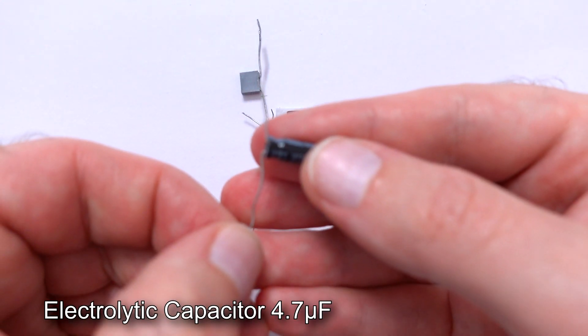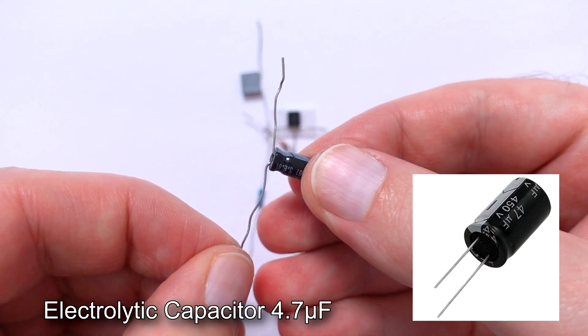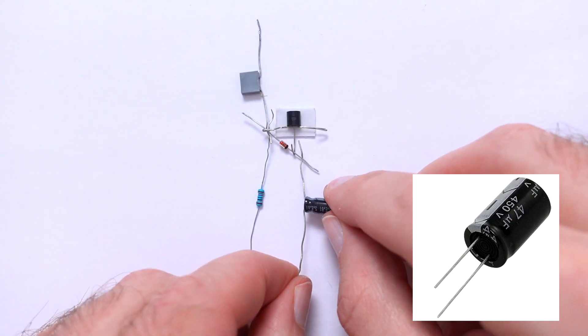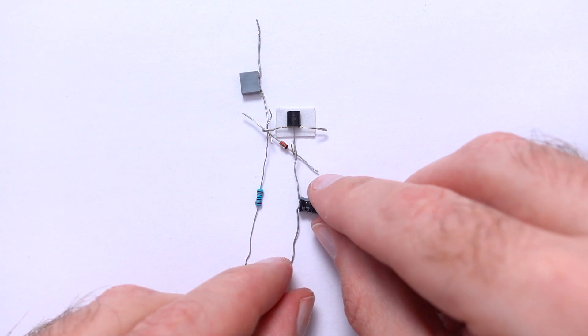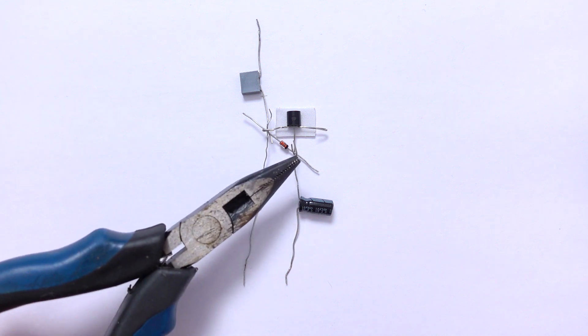Next, electrolytic capacitor 4.7 microfarads. It has two tips. Find a shorter one. It's a negative side and put it on the middle leg of transistor. Now we need to solder it here and here.